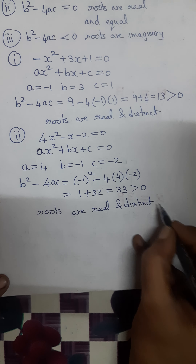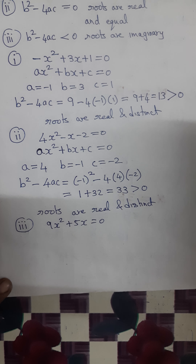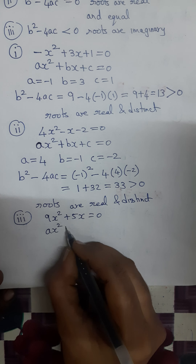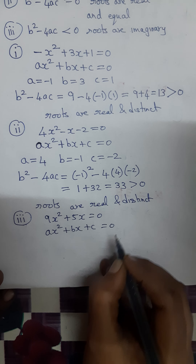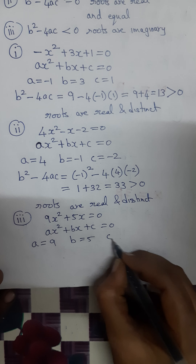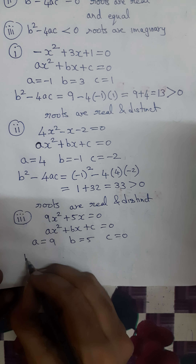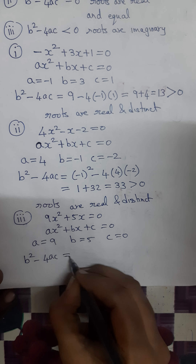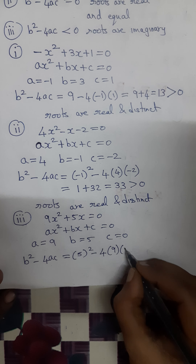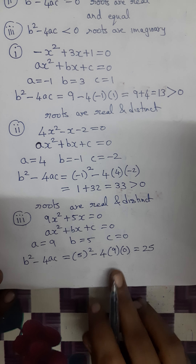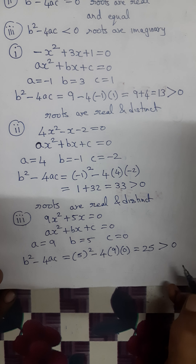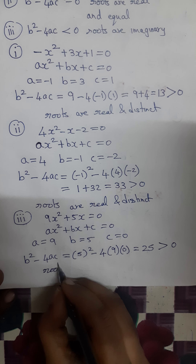The third subdivision: 9x² + 5x = 0. Comparing with ax² + bx + c = 0, we get a = 9, b = 5, and c = 0. Calculating b² - 4ac: 5² = 25, minus 4 into 9 into 0 = 0. So 25 - 0 = 25, which is a positive number greater than 0. Therefore the roots are real and distinct.